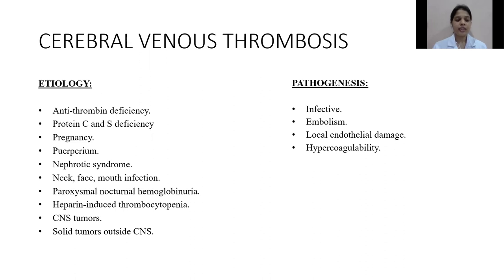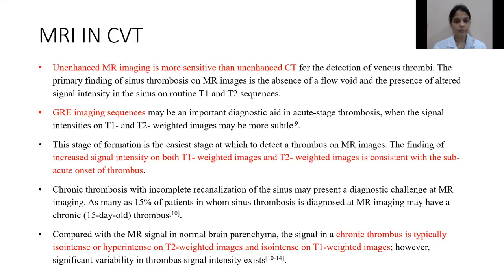The etiology of CVT can be varied, including antithrombin deficiency, protein C deficiency, protein S deficiency, pregnancy, puerperium, and others. Pathogenesis can be infective, embolic, due to local endothelial damage, or hypercoagulability.